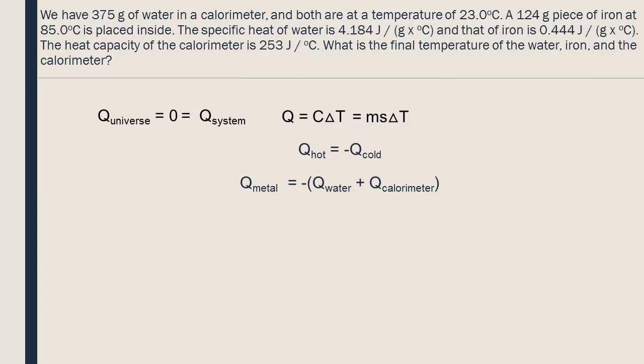The water and the calorimeter will heat up, while the metal will be cooled down. This exchange of energy will continue until the system reaches equilibrium, so when the water, metal, and calorimeter are all at the same temperature. This final temperature is our unknown variable.